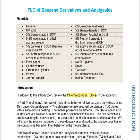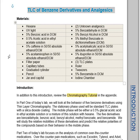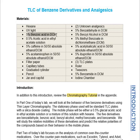Hello everyone, welcome to Organic One Lab, CH 4511. This will be the pre-lab video for TLC of benzene derivatives and analgesics. You will be working with a lot of different molecules, but there's one big similarity between all of these. When you look up these molecules for your safety data chart, especially benzoic acid, caffeine, acetaminophen, benzaldehyde, benzyl alcohol, methyl benzoate, acetylsalicylic acid, ibuprofen, and benzamide — all of these have a benzene ring as part of their structure.